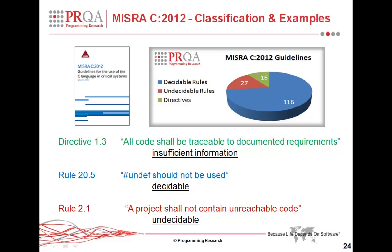If instead all the information is available, then it needs to be decided. MISRA calls the guideline a rule, and it has to be decided whether it's decidable or undecidable. An example of a rule which is decidable is that UNDEF should not be used. In this case, it is possible to think of an analyzer which scans through the source code and identifies all the UNDEF preprocessing directives. There's no problem with that and it's clearly decidable.